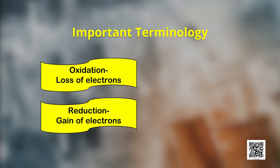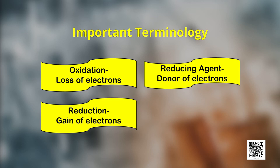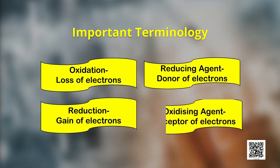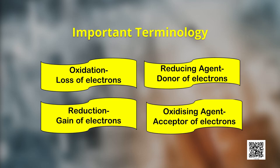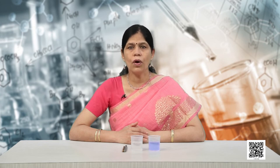In this reaction, sodium, which is oxidized, acts as a reducing agent because it donates electrons to each of the elements interacting with it and thus helps in reducing them. Chlorine, oxygen and sulfur are reduced and act as oxidizing agents because these accept electrons from sodium. To summarize: oxidation is loss of electrons by any species; reduction is gain of electrons by any species; oxidizing agent is an acceptor of electrons; and reducing agent is a donor of electrons.